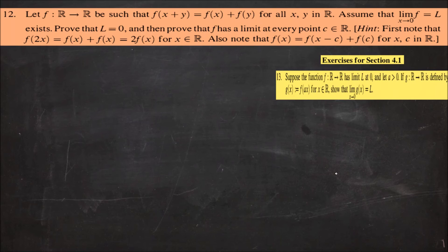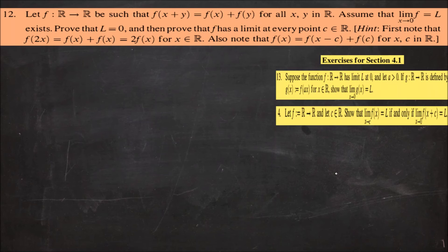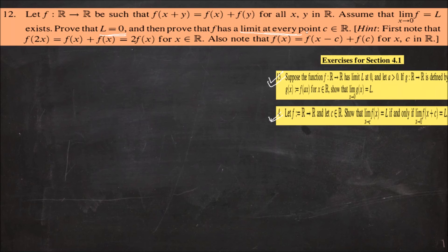The first result from Exercise 4.1 states: if f has limit L at 0, and we define g(x) = f(Ax) for every x ∈ ℝ, then the limit as x tends to 0 of g(x) is also equal to L. The second result, question 4 from Exercise 4.1, states: limit as x tends to c of f(x) equals L if and only if limit as x tends to 0 of f(x + c) equals L. We will use the first result to prove L = 0, and the second to prove f has a limit at every c ∈ ℝ.